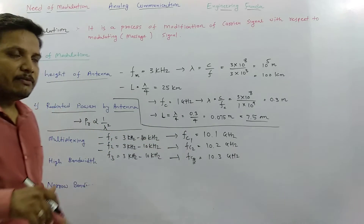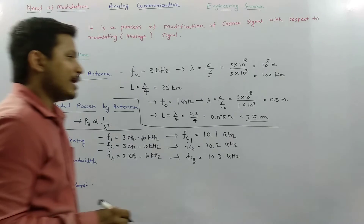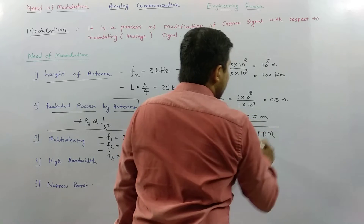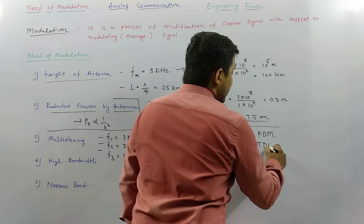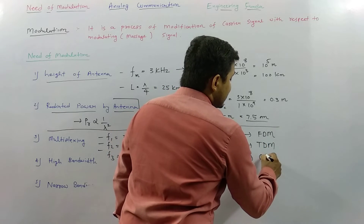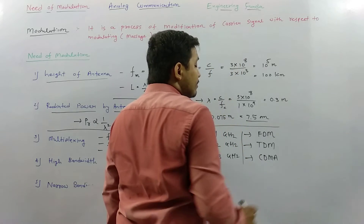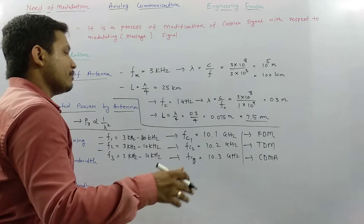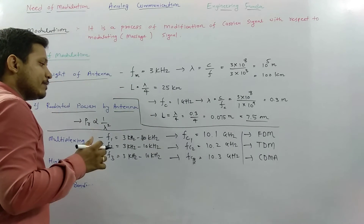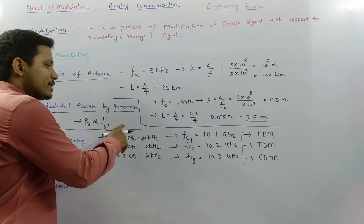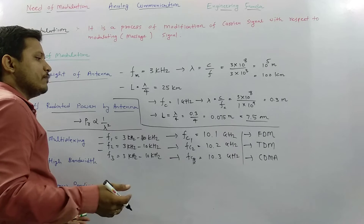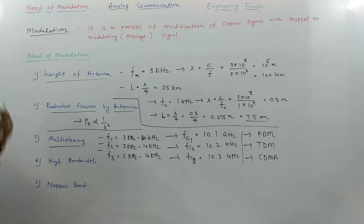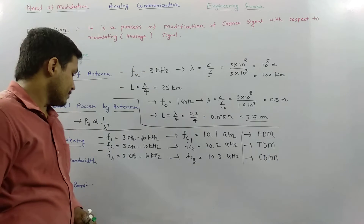There are various multiple access techniques based on modulation: FDM (frequency division multiplexing), TDM (time division multiplexing), and CDMA (code division multiple access). These techniques reduce interference between signals and enhance channel capacity, which is a very important advantage of the modulation process.